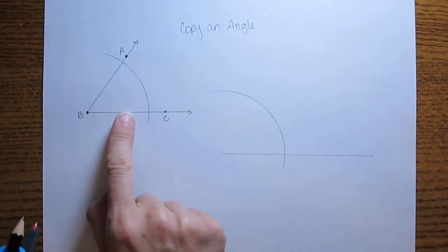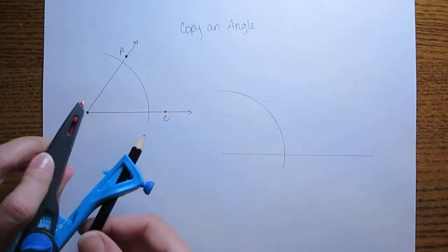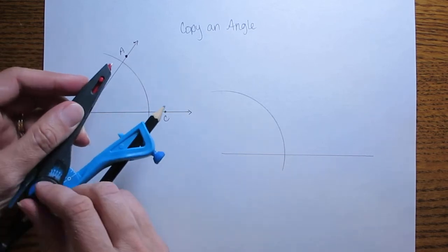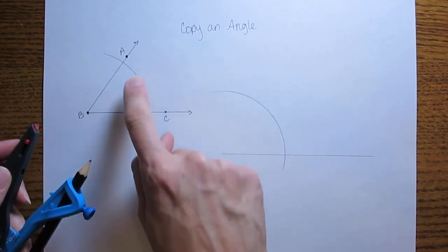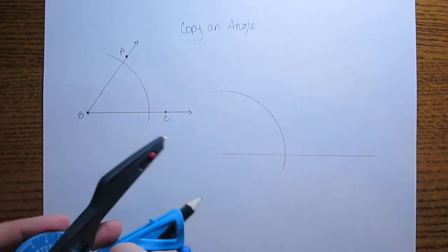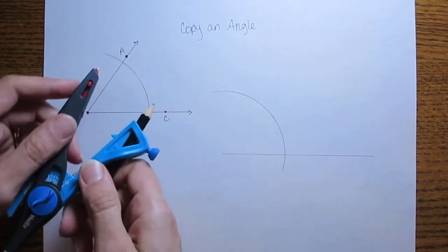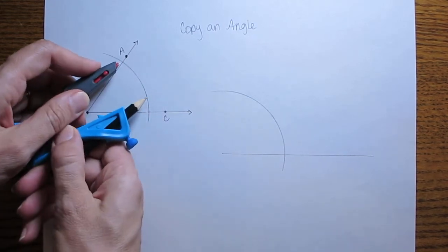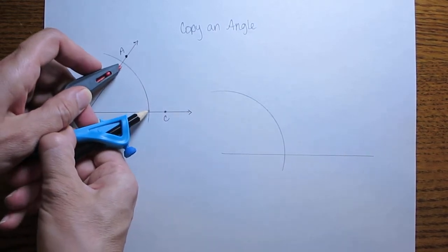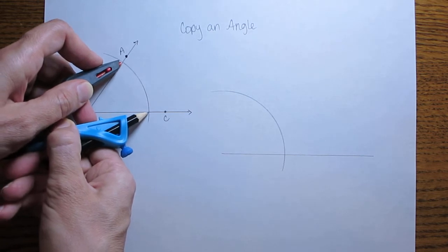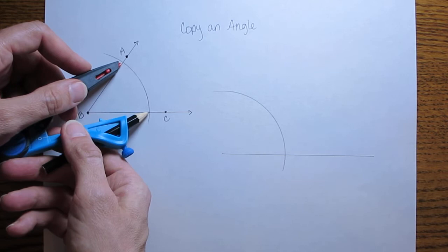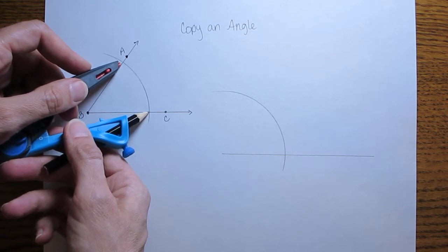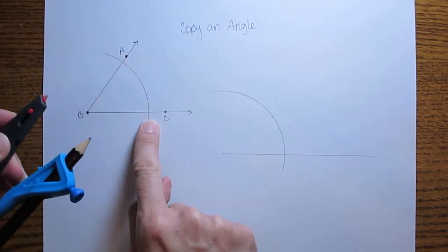Now we're going to go back to the original angle and we are going to adjust our compass so that it opens to the same width from where the arc intersected both of those original rays. So adjust the compass so that you get that same width on your compass as there is from one side of the arc to the other in the original angle.